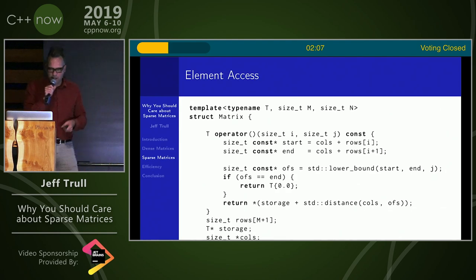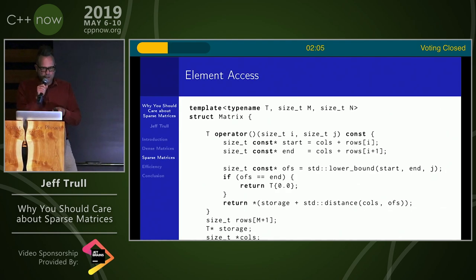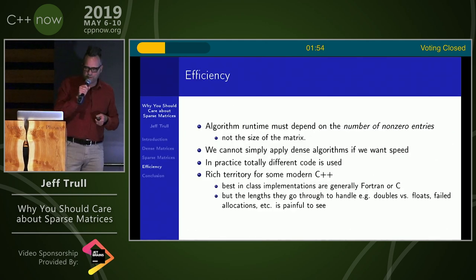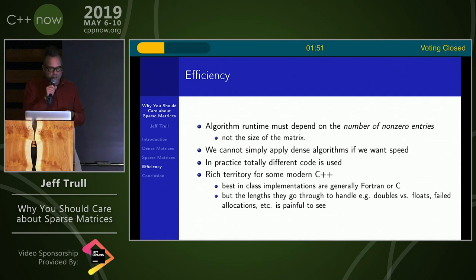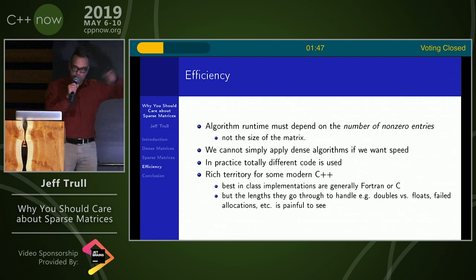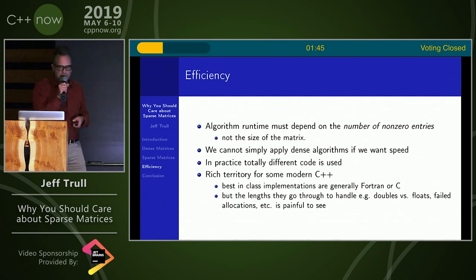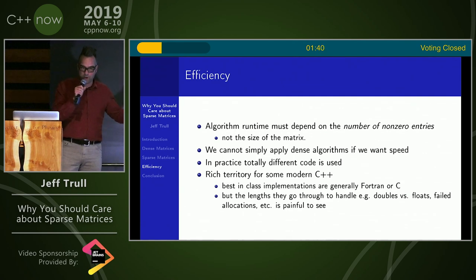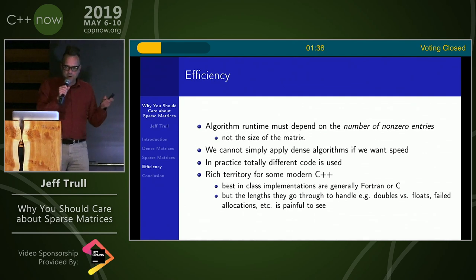The thing to note about the accessor is that sometimes we have to return a zero because we didn't find the value, and that means we can't return a reference — this is like the proxy iterator problem. For efficiency, the runtime needs to depend on the number of non-zero entries and not the size of the matrix overall. That means we cannot simply apply dense algorithms with this sparse element accessor if we want proper speed. In practice, totally different code is going to get used.